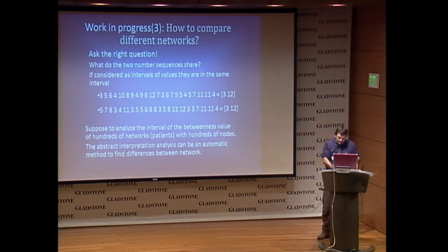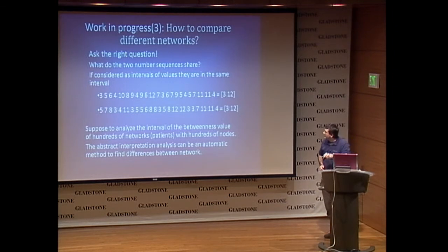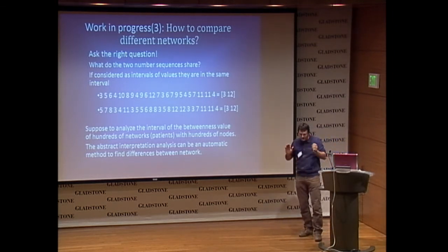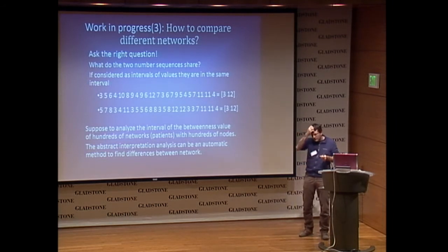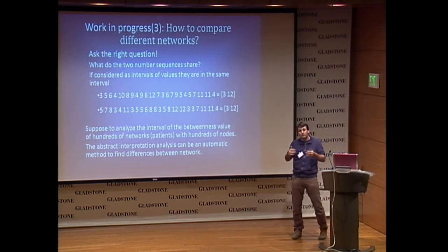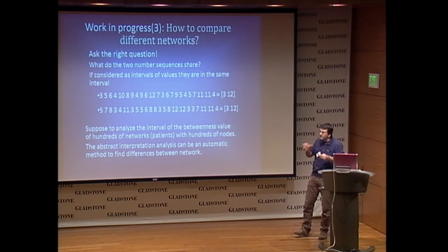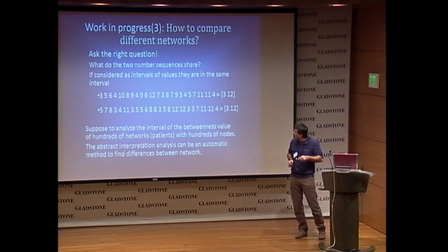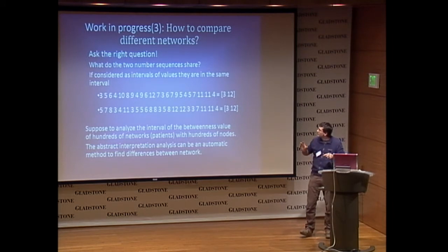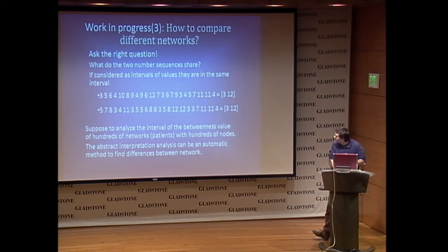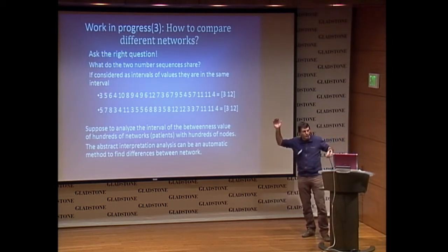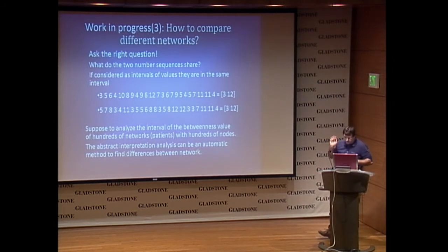There are many properties that can be found with abstract interpretation, and this is the next planned work. The technique comes from software analysis, where you have thousands of variables and want to check if the software works correctly. The same technique can be applied to a network with thousands of nodes. In fact, this technique has been used to test the software of the Airbus A380.